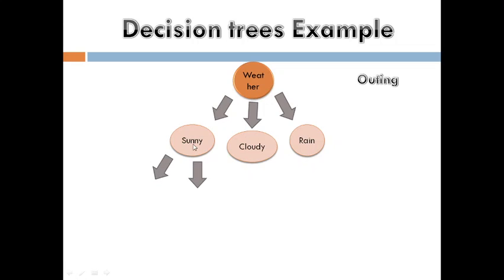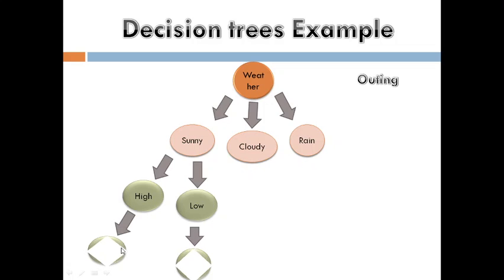For the sunny condition, you calculate the entropy value based on temperature. If the temperature is high, you are not going on the outing. If the temperature is low, you will go. For the cloudy condition, maybe you will go outside, but if it is very cloudy, you are not going. Here also you will take entropy.